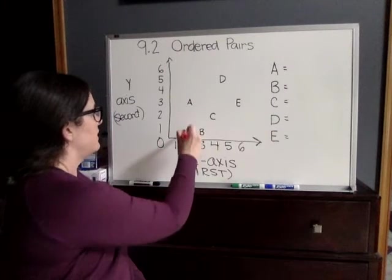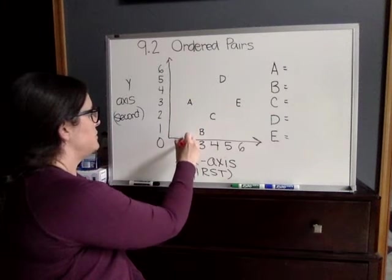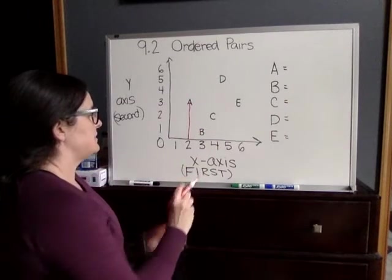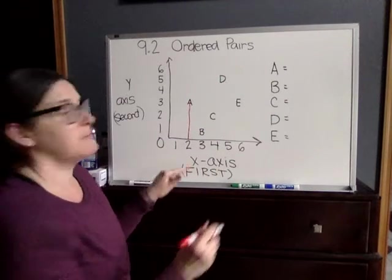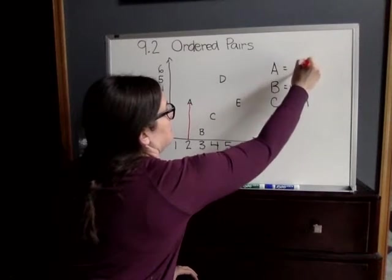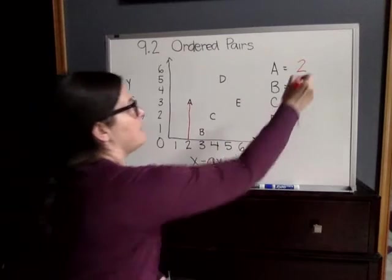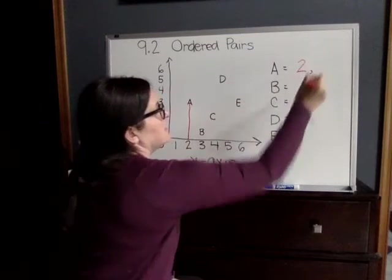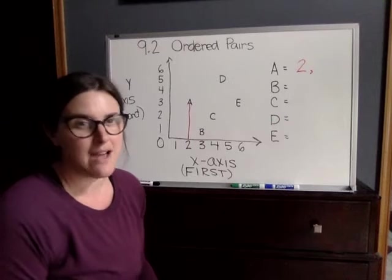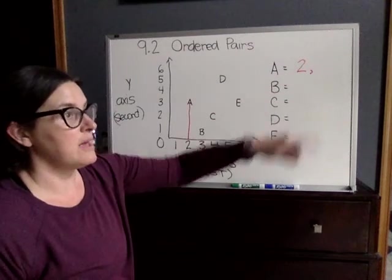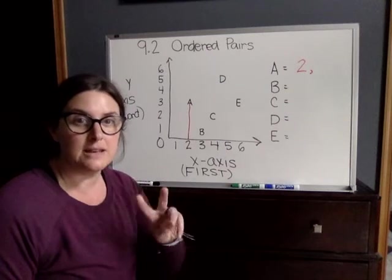So A is going to be at the 2 point. So x is always the first number you write, so that's 2. And when we write our ordered pairs, there's always a comma in the middle. So when you give me your answer, it has to have a comma in the middle. So 2 comma and then the second number.